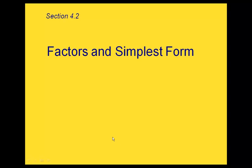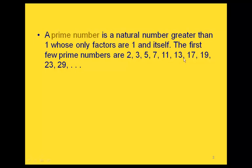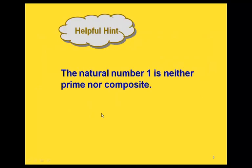This is section 4.2: Factors and Simplest Form. When we talk about factors, we have two different types of whole numbers. First, prime numbers — a prime number has only a factor of 1 and itself. Here are the first few prime numbers: 2, 3, 5, 7, 11, and so on. For example, for 11, the only numbers that multiply to give you 11 are 1 and 11. On the other hand, a composite number is a natural number greater than 1 that's not prime. Some examples of composite numbers would be 4, because 4 is 2 times 2 — it does have factors besides just itself and 1. Notice that the number 1 is neither prime nor composite.